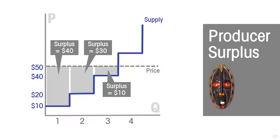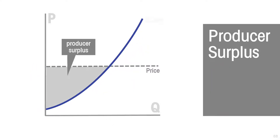A third seller, not willing to accept less than forty dollars, has a producer surplus of ten dollars. So for each item, the producer surplus is the difference between the price and the height of the supply curve for that item. Therefore, the producer surplus for the entire market is the area between the line representing price and the supply curve. For a market with a large number of suppliers and a smoother supply curve, the producer surplus is the area above the supply curve and below the line representing price.